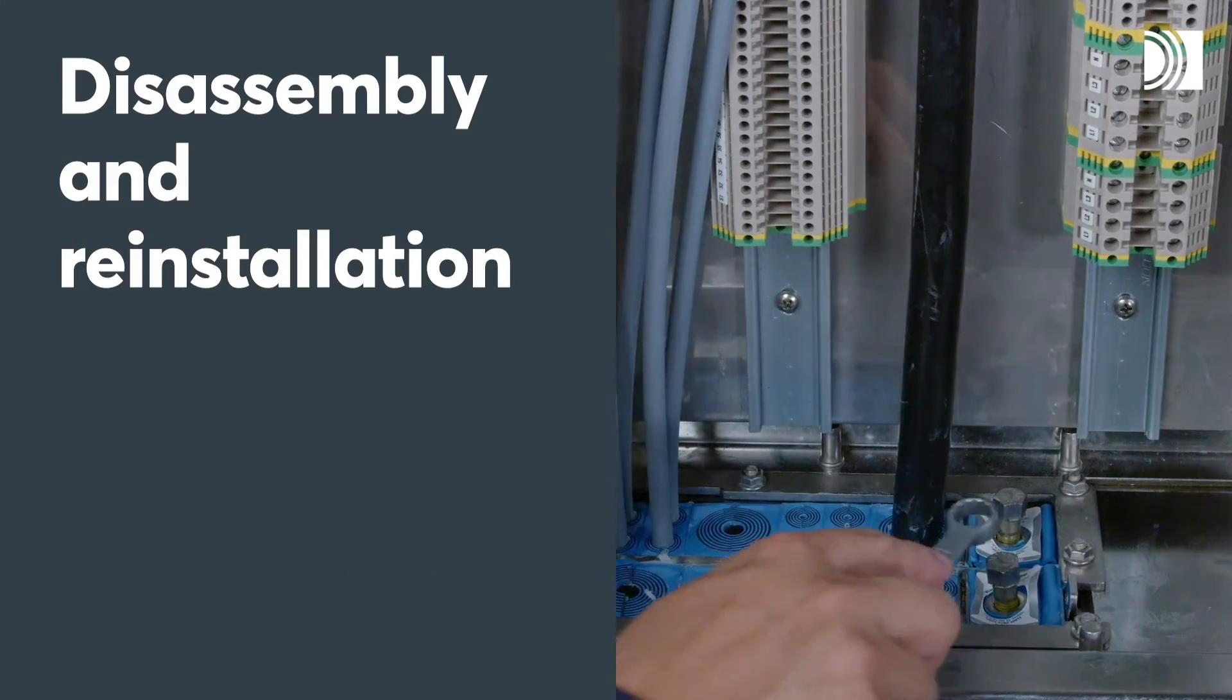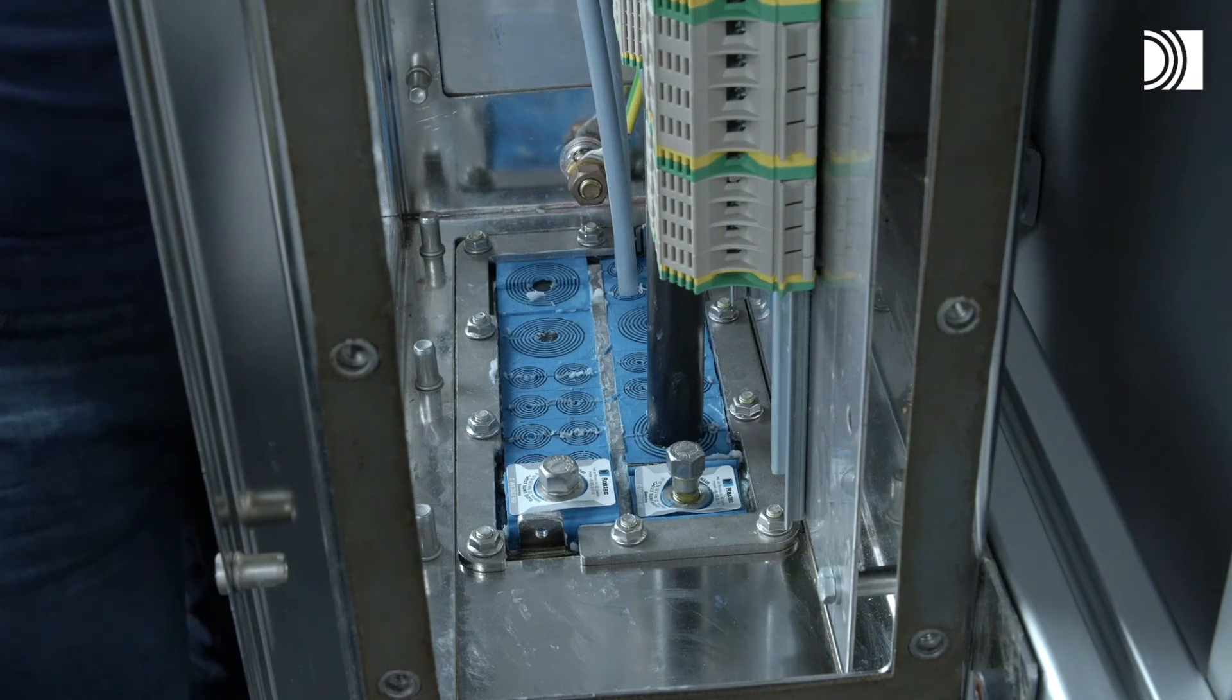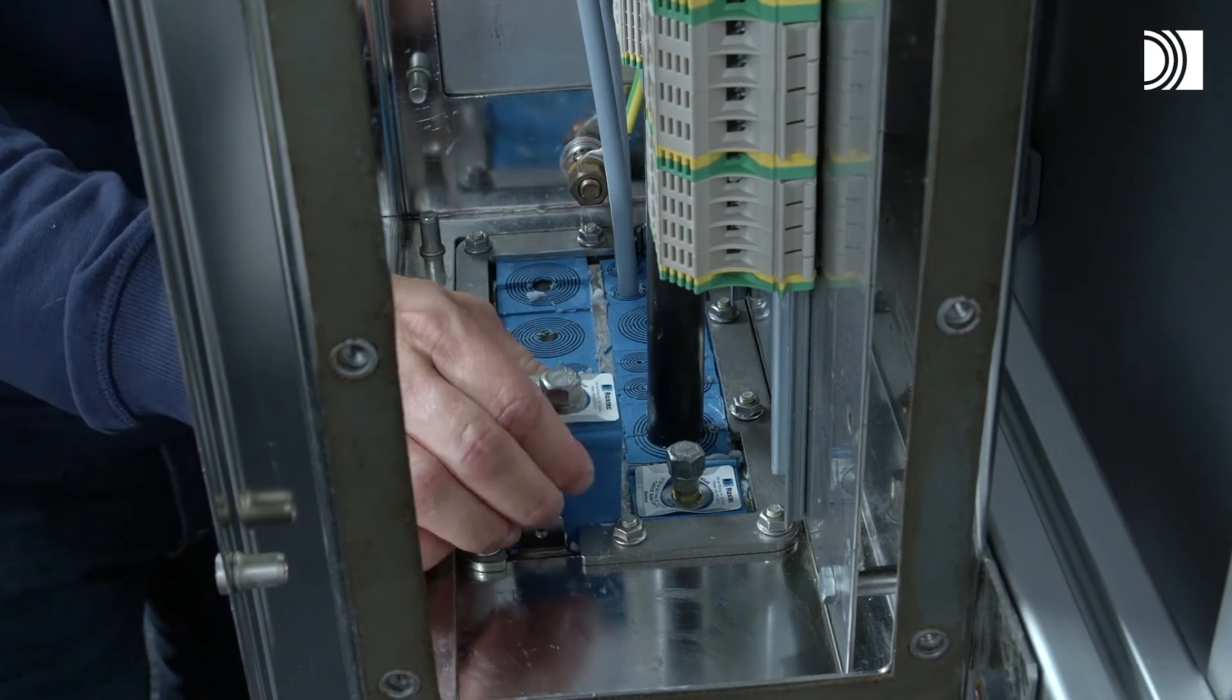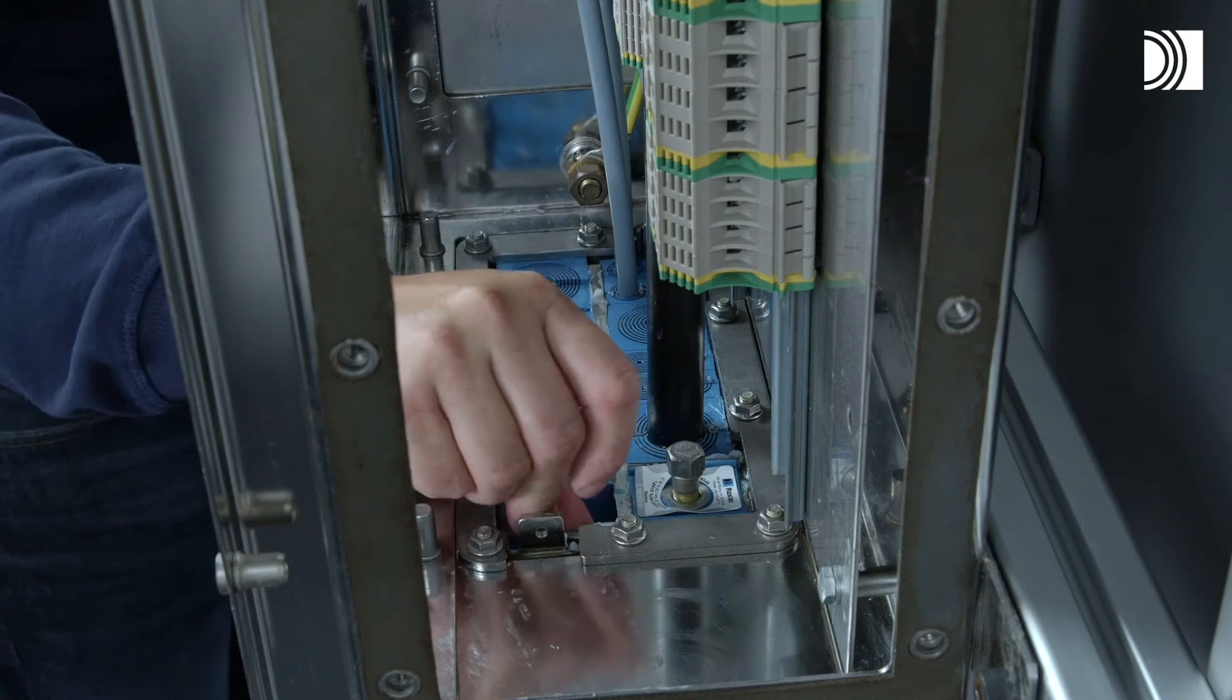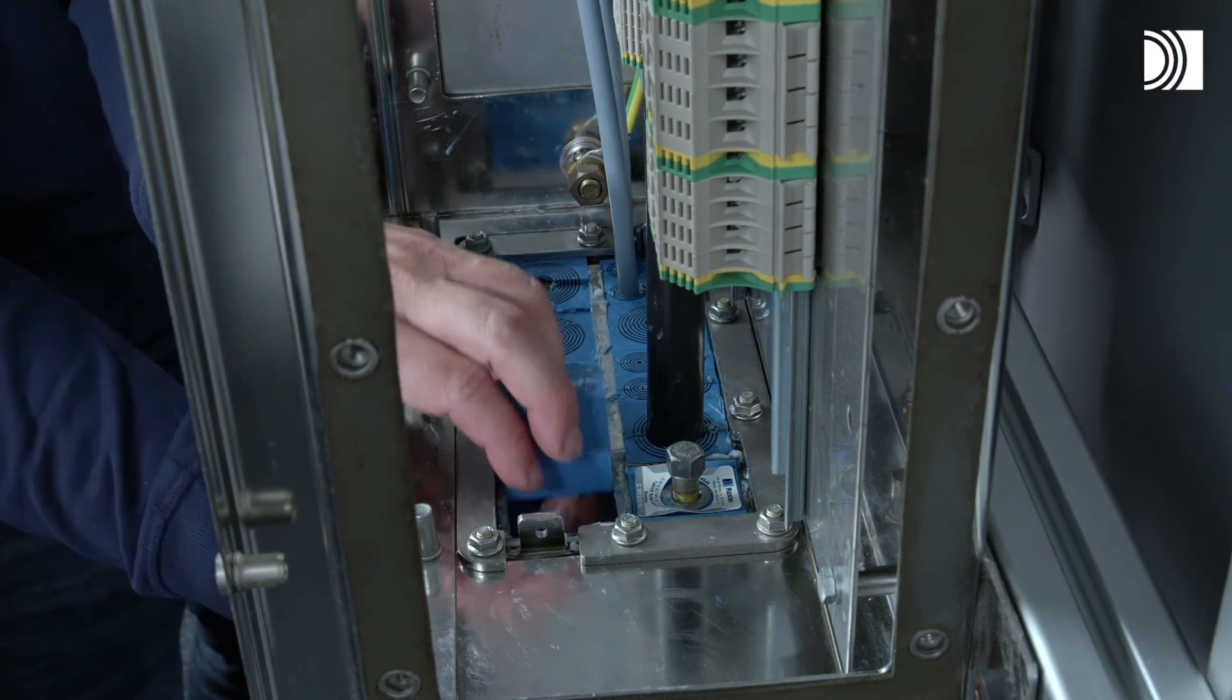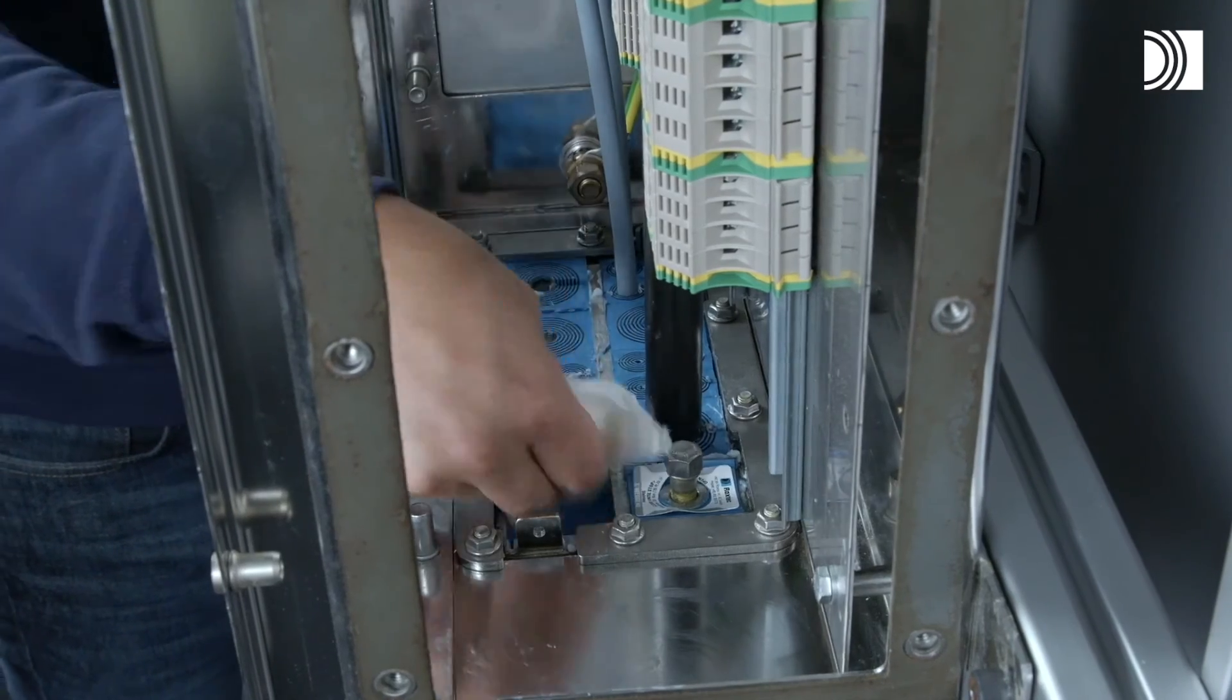Disassembly and reinstallation. Untighten the screws of the compression unit and remove it. Lift the stay plate and remove the modules needed. Clean and lubricate the exposed surfaces and continue the reinstallation.